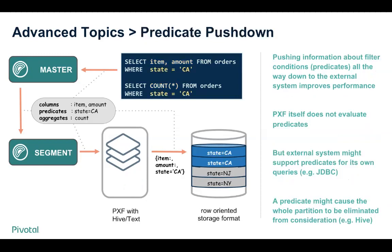Another technique is predicate pushdown. Similar to column projection, if a customer is only interested in orders from California, that predicate must be propagated all the way from master to segment to PXF and to the adapter. If the adapter can utilize this — for example, if data is partitioned by state and only one partition needs to be read — that greatly improves the amount of data read and improves both I/O and network performance. An entire partition can be eliminated. If the adapter cannot evaluate predicates, PXF itself does not evaluate them either, so it is truly up to the adapter to take advantage of this feature.